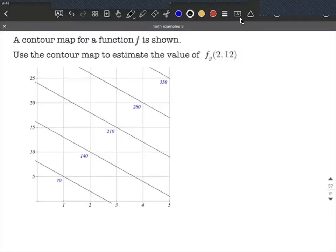In this example, we're going to use a contour map to estimate a partial derivative with respect to y. We're given that we want to find the partial derivative with respect to y of f(2,12).